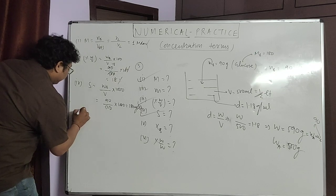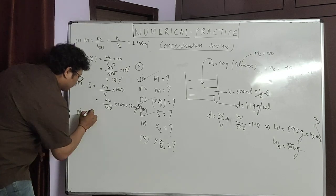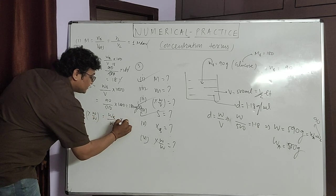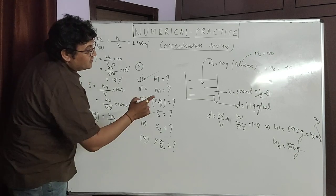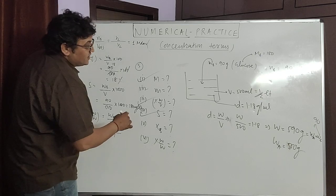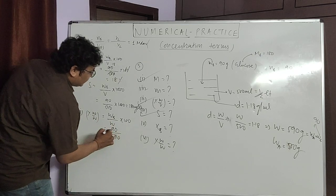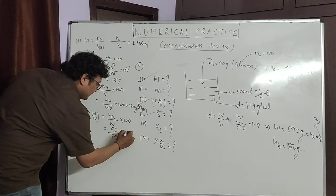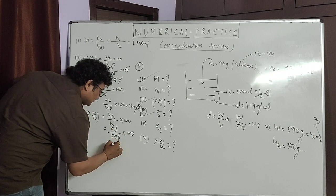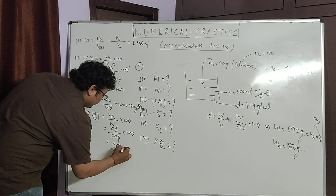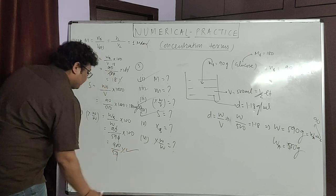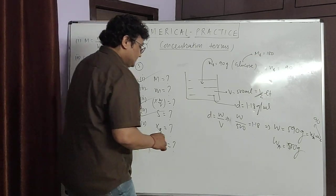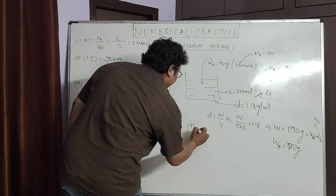Now percentage weight by weight (sixth part): weight of solute divided by weight of solution, multiplied by 100 = 90/590 × 100 = 900/59 ≈ 15.25% by mass. This part is done.